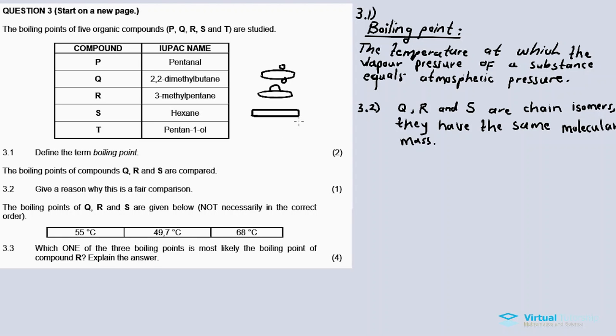So S with no branches has a boiling point of about 68 degrees. The more branched Q is about 49.7 degrees Celsius. And R is our answer - in between. The more branched, the lesser the boiling point. No branches, the higher the boiling point. Lesser branches, the boiling point is somewhere in between. So the answer is R at 55 degrees, which is compound R.